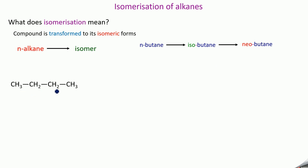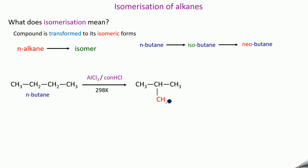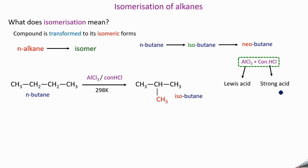For example, CH3-CH2-CH2-CH3 — four carbon atoms in a straight chain — is N-butane. On treatment with aluminum trichloride and concentrated HCl at 298 Kelvin, it is converted to a compound with three carbon atoms in the straight chain and one carbon in the branch — totally four carbon atoms, the same molecular formula C4H10, but different structure. This branched compound is called isobutane. So N-butane is converted to isobutane using aluminum trichloride and concentrated HCl — aluminum chloride being a Lewis acid and concentrated HCl being a strong acid.